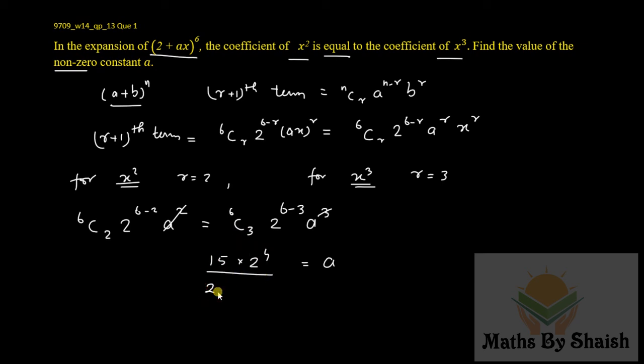Which can be cancelled: 5 threes are 15, 5 fours are 20, 2 twos are 4, 2 ones are 2. Hence we got a as 3/2. That is the value of a and we can see it is non-zero. So thank you for watching.